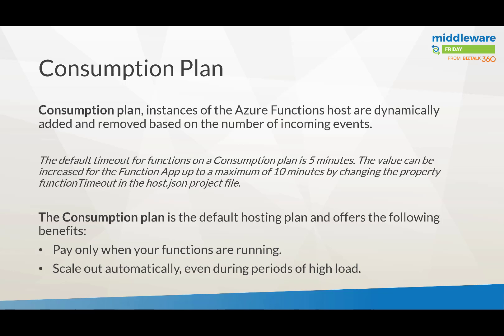On the other end, you have your consumption plan, where hosts are dynamically added based on incoming requests. One thing to keep in mind is that your functions should really be stateless, because they can only run for a short time. The default timeout is about five minutes, and you can extend it up to 10 minutes by changing a property in your host JSON file. The benefits here are that you only pay as you go — it's more of a serverless type of option where you get more dynamic scaling, instead of having static resources for your functions.